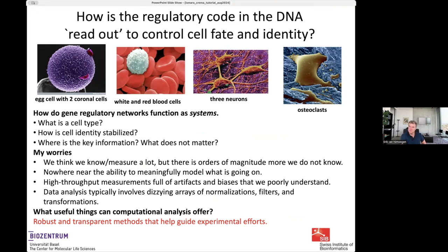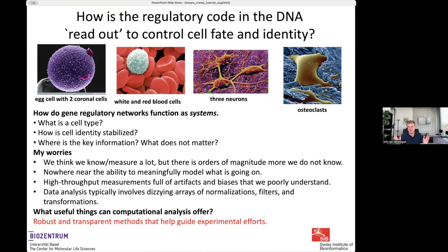High-throughput measurements are often problematic — they have artifacts and biases that we often don't fully understand, making it hard to interpret such data. The way most people analyze this type of data involves very complicated arrays of normalizations, filters, and transformations, so that at the end of the day it's hard to relate results to the ground truth of what's going on in the cells. Our abilities to understand what's happening with regulatory circuits are quite limited.